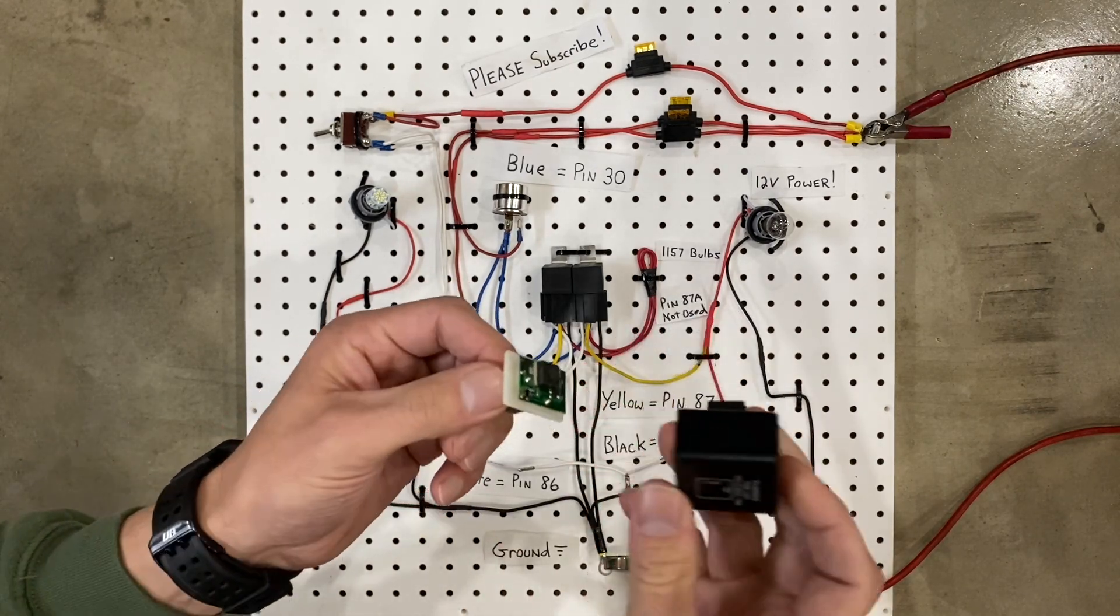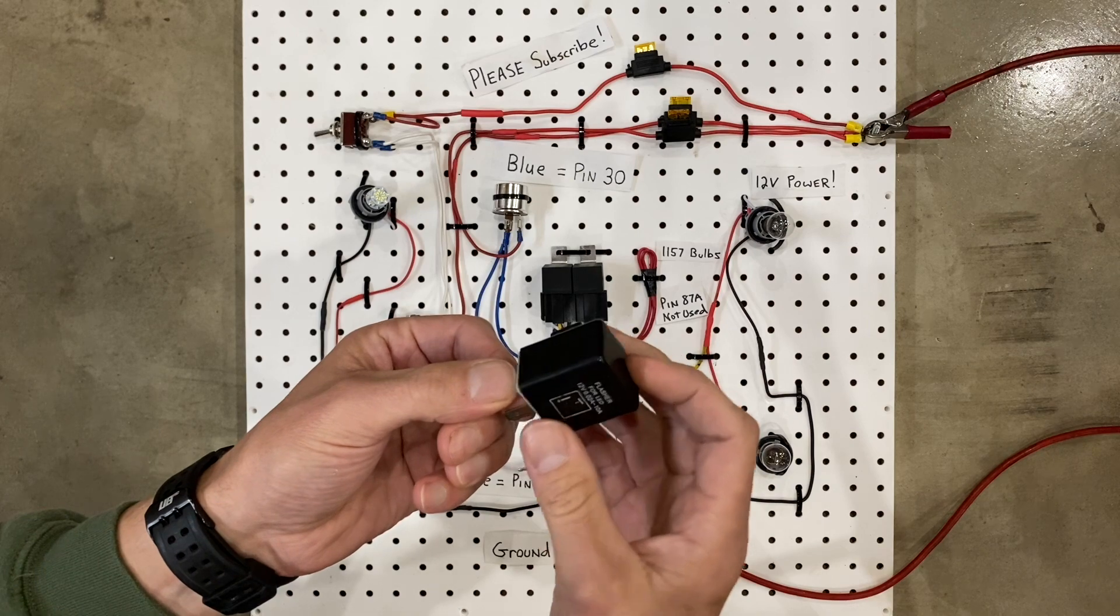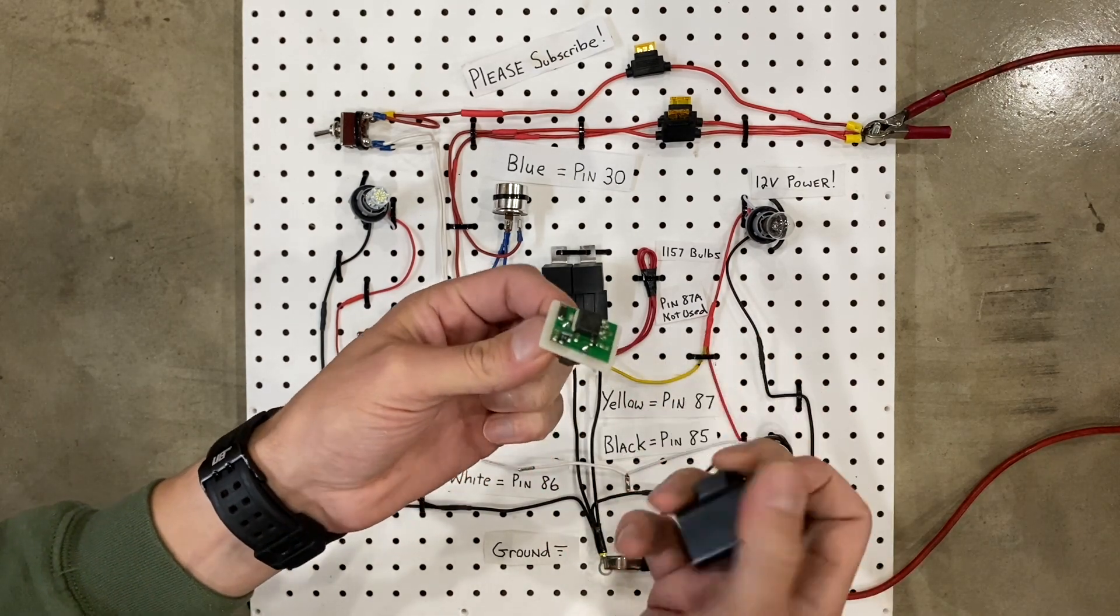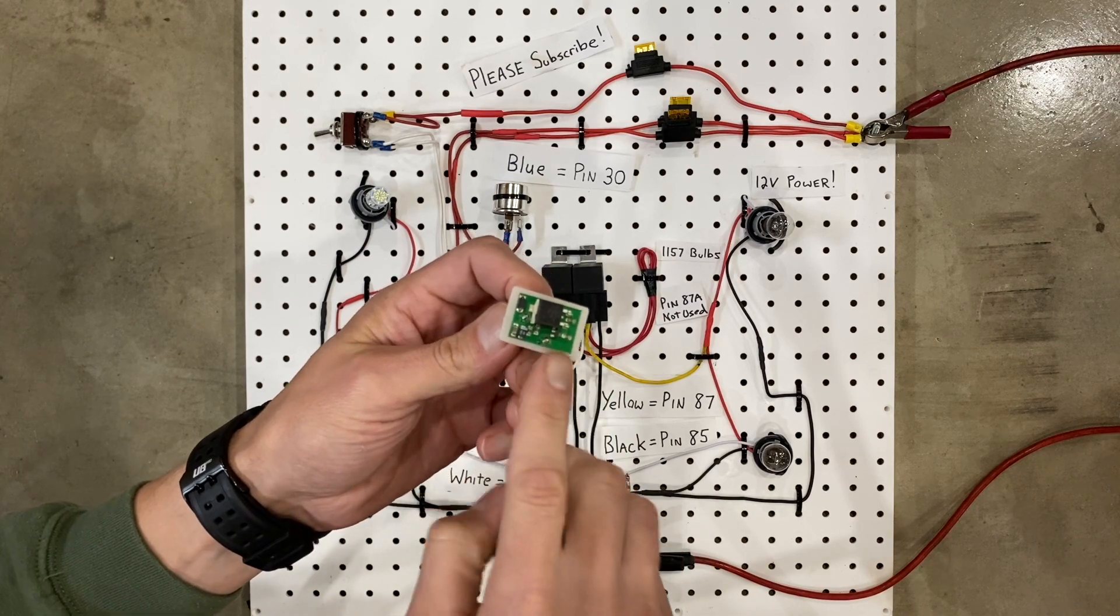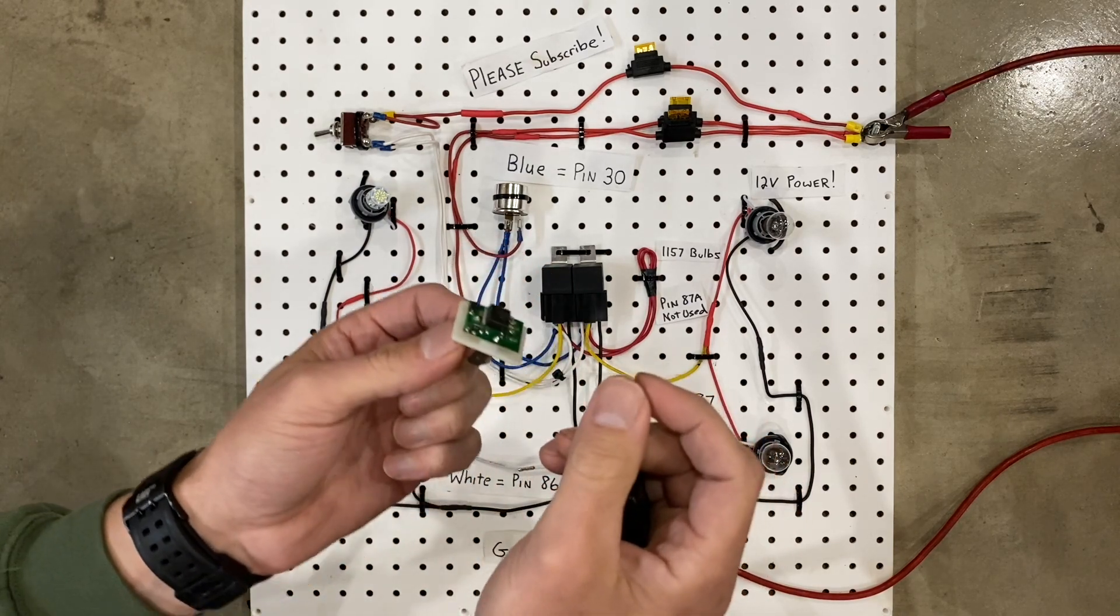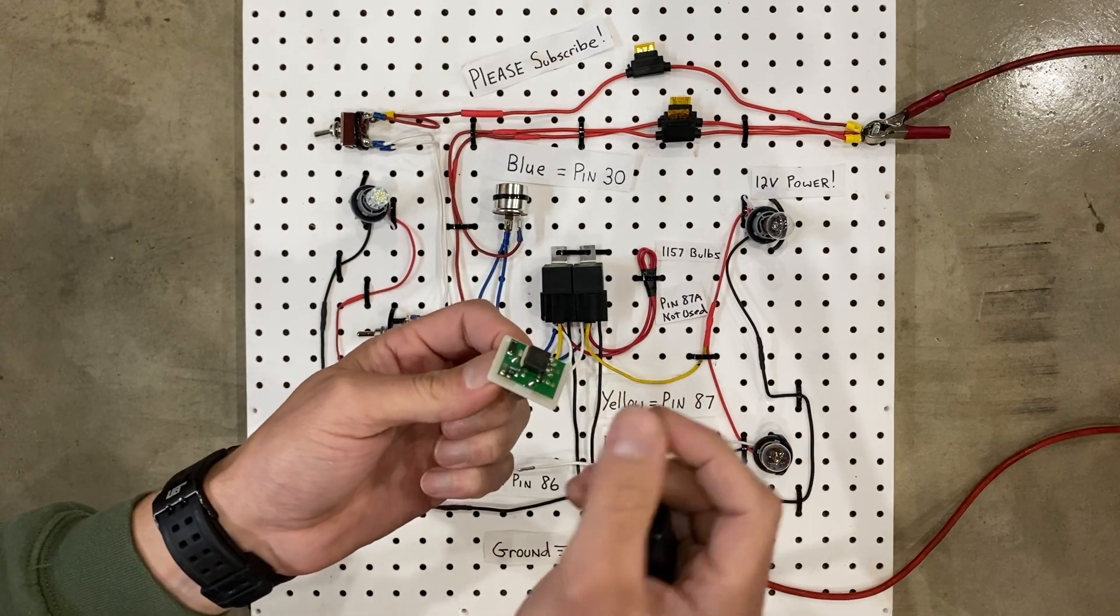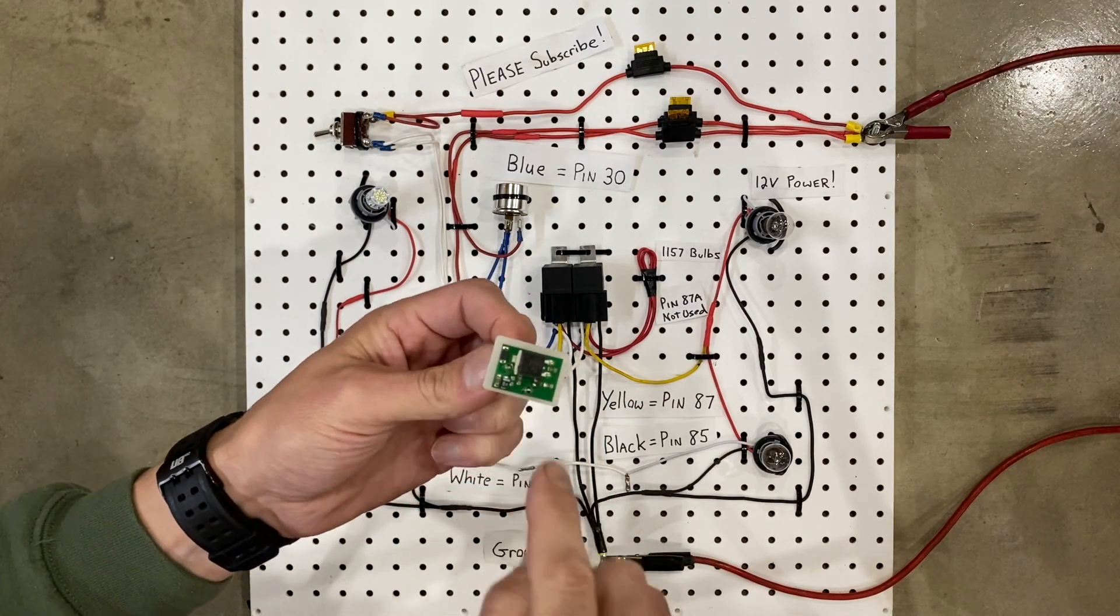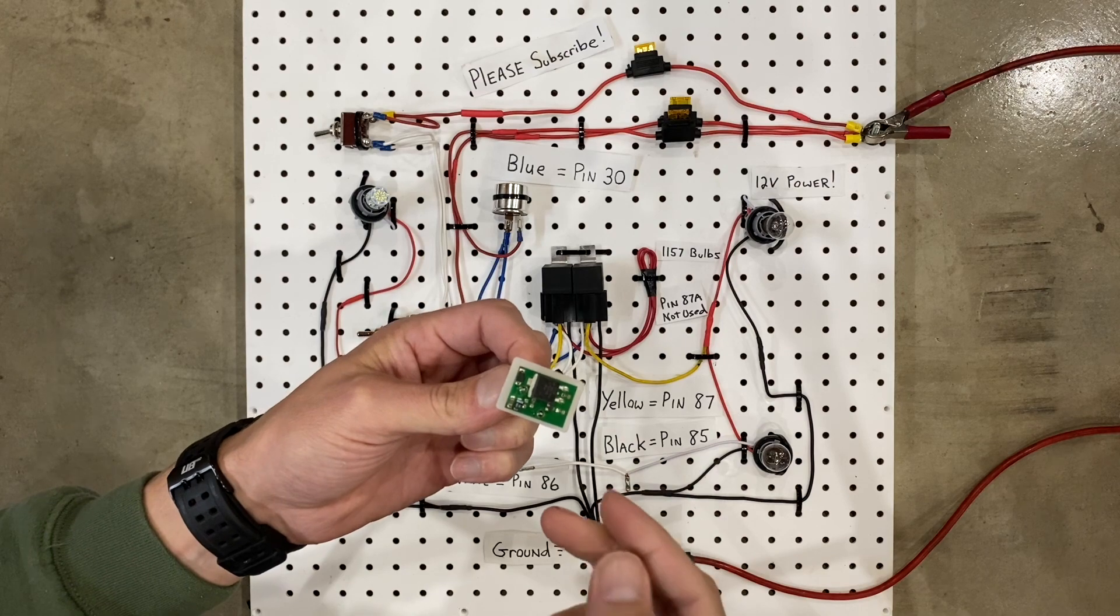Now this is kind of ridiculous because this case is huge and it just covers up this little tiny circuit board. It's completely unnecessary, but that's beside the point. Inside is a circuit board, so instead of having a metal spring that opens and closes because it heats up, it has witchcraft that goes on in a circuit board.